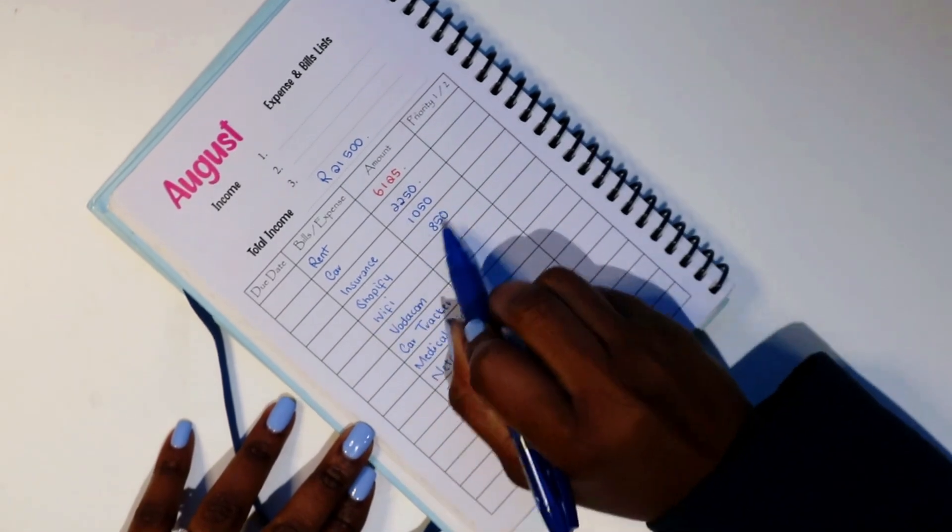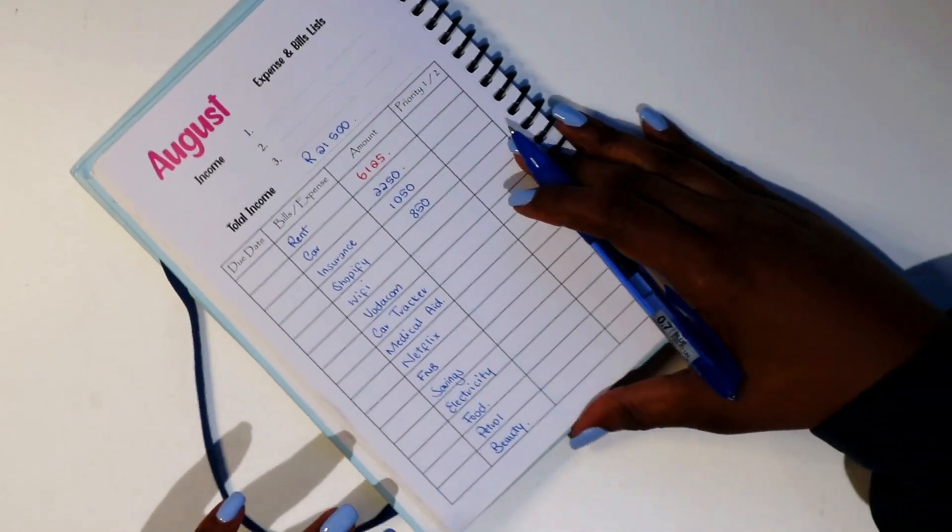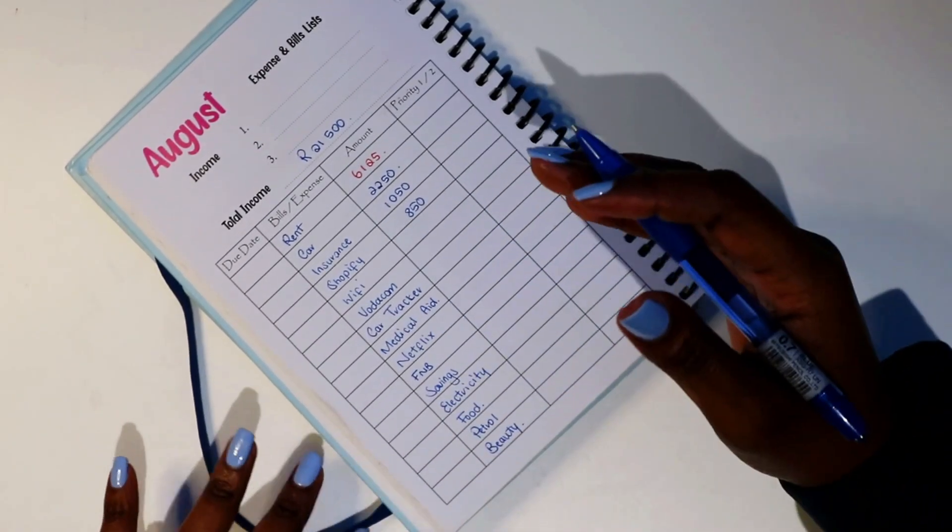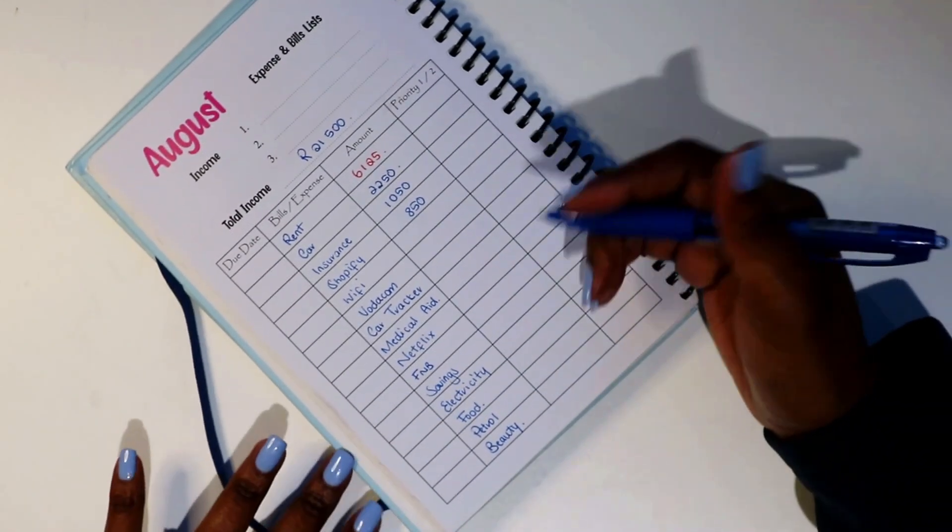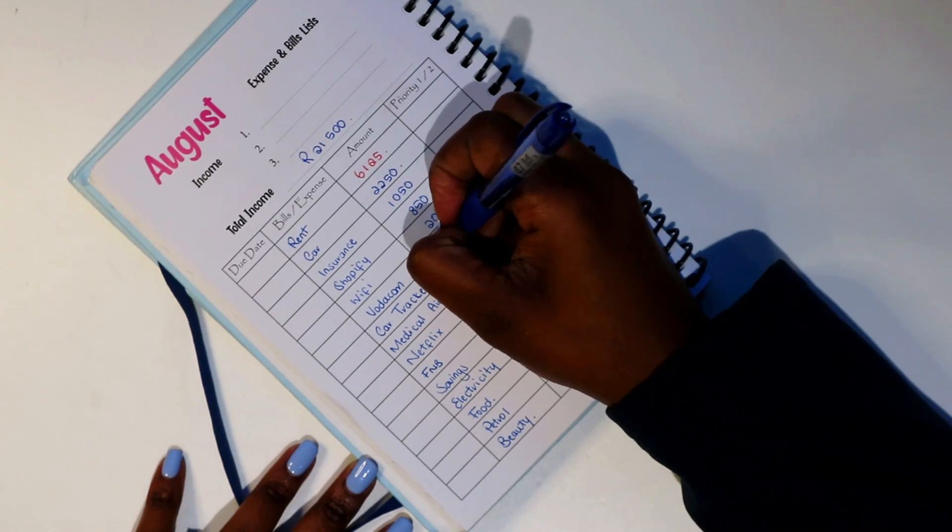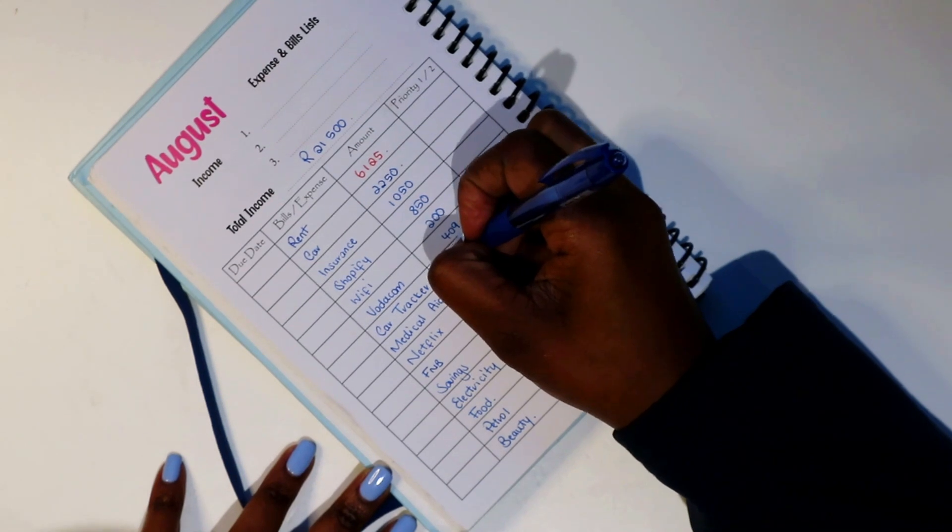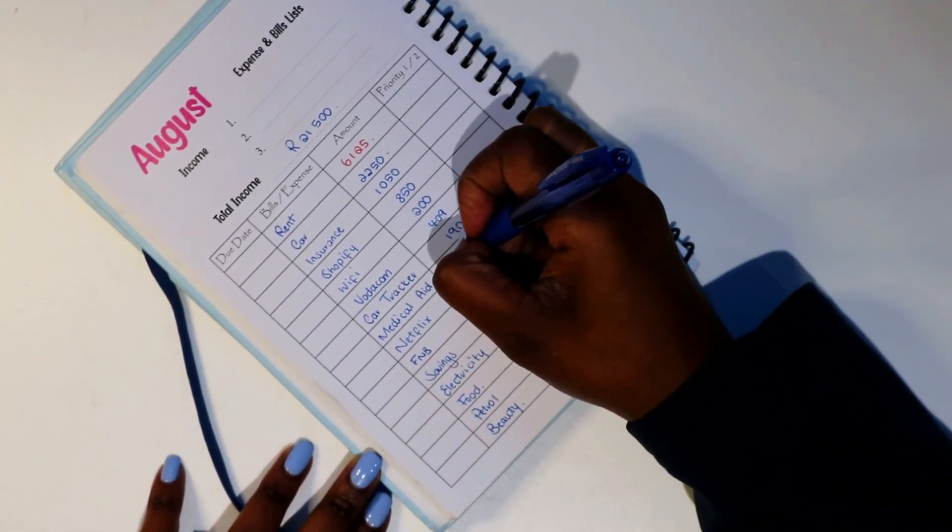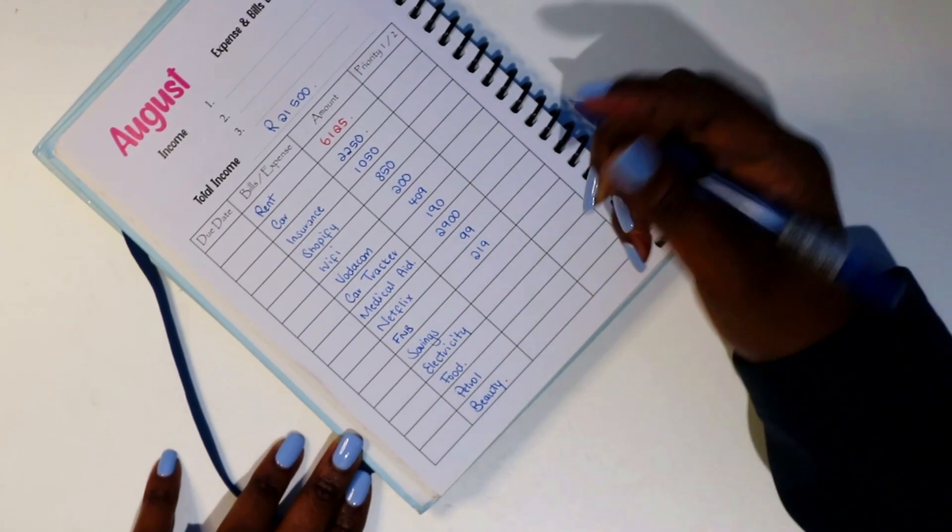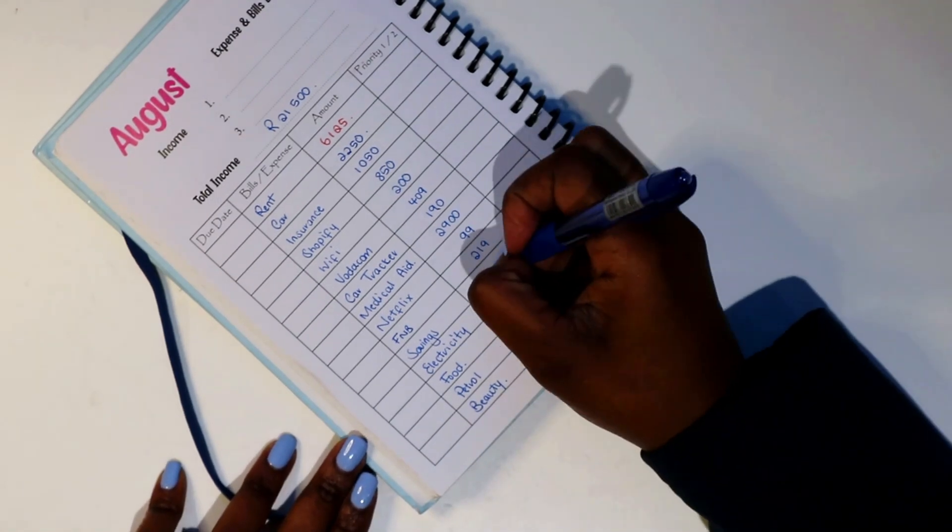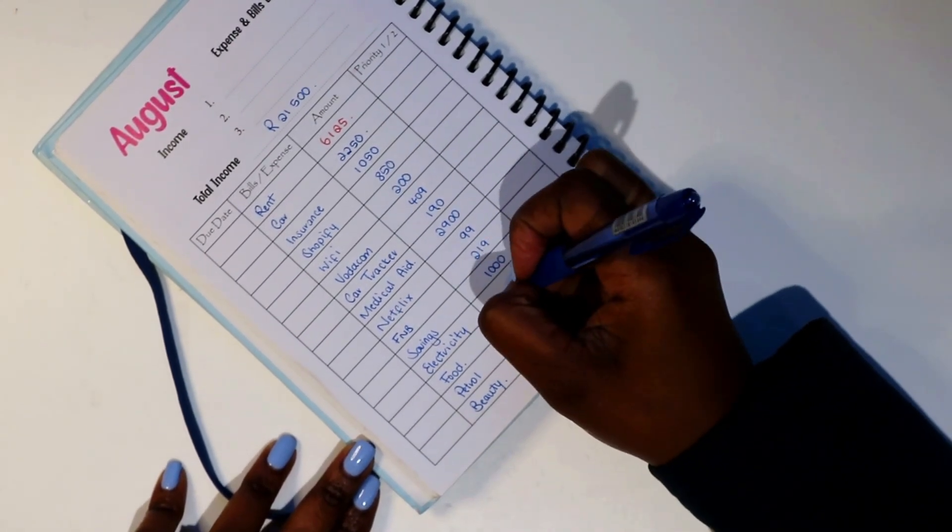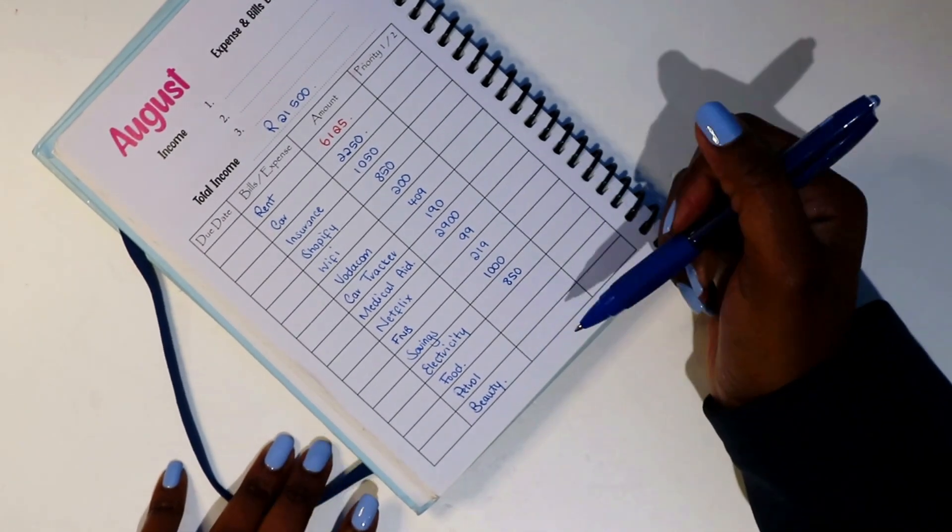Shopify 850. With Shopify it depends how many sales I make. So if you do have Shopify you get what I'm talking about. But if you don't, there's a standard cost for Shopify just for having a website and having a shop on there. But the more sales you make, the more money you pay at the end of the month if that makes sense. So it's a little bit hectic but it's okay. Wi-Fi 200 rand. Vodacom 409, so that has gone up as well. It used to be 399. Card tracker 190. Medical aid 2,900. Netflix 99 rand. FNB, so that is my card, my premium card, is 219 a month that I pay for it. Savings, we're going to put 1,000 away. Electricity, I'm going to budget 850. Last month I budgeted 800 and I spent 850.